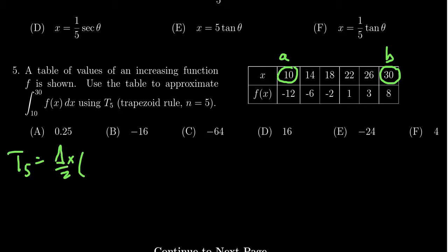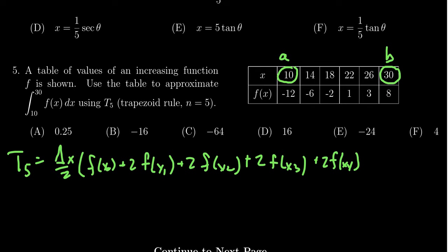...f(x0) plus 2 times f(x1) plus 2 times f(x2). We're going to get 2 times f(x3) plus 2 times f(x4) plus 1 times f(x5) like so.